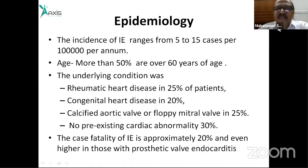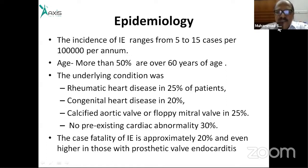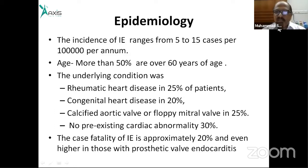Pre-existing cardiac conditions are identified in many cases. Congenital heart disease accounts for over 20%, rheumatic fever for over 25%, degenerative heart disease for over 25%, and together rheumatic and degenerative heart disease account for over 50%. We can identify a pre-existing cardiac condition in over 70% of cases.